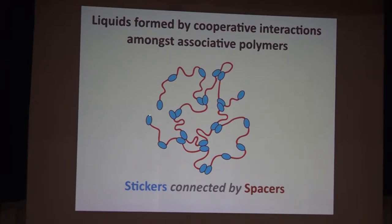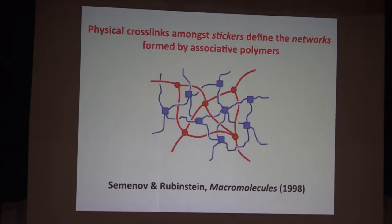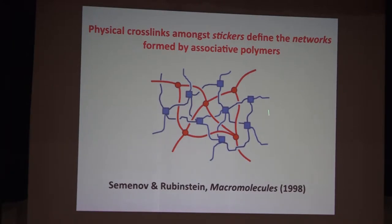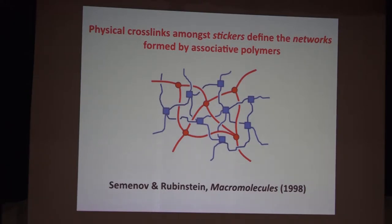These polymeric liquids are formed by cooperative interactions amongst what we'll refer to as associative polymers, depicted here as stickers interspersed by spacers. The nature of these stickers and spacers is what we'll focus on today. These stickers interspersed by spacers have the characteristic of being connected by physical crosslinks — non-covalent interactions that are readily reversible and have characteristic time scales.